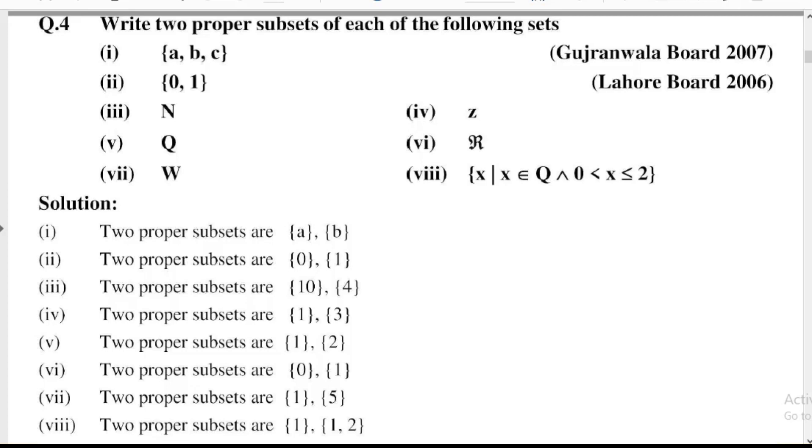Part number 8: {x | x ∈ Q ∧ 0 < x ≤ 2}. This means x such that x belongs to Q, where Q means rational numbers, and x is less than or equal to 2 and greater than 0. So two proper subsets are {1} and {1, 2}.